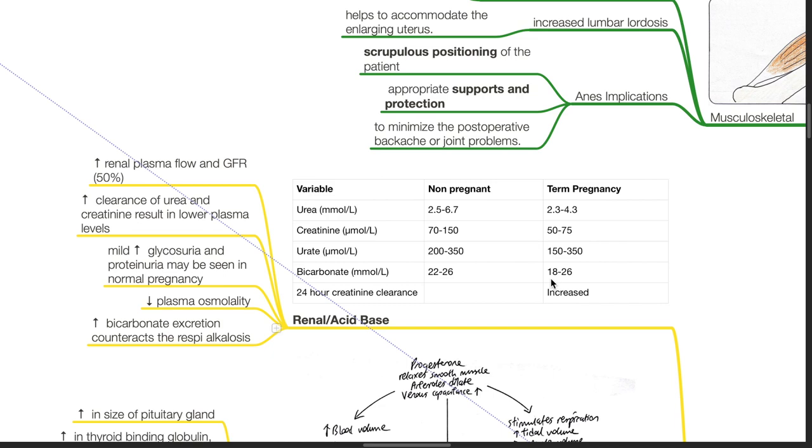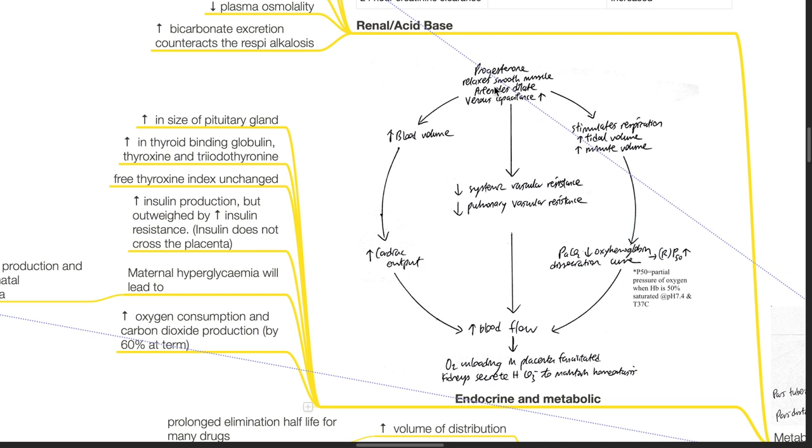Endocrine and metabolic: Progesterone relaxes smooth muscle. Arterioles dilate. Venous capacitance increases. Blood volume, cardiac output, and blood flow all increase. Oxygen unloading in the placenta is facilitated.